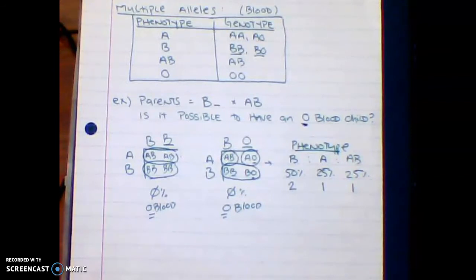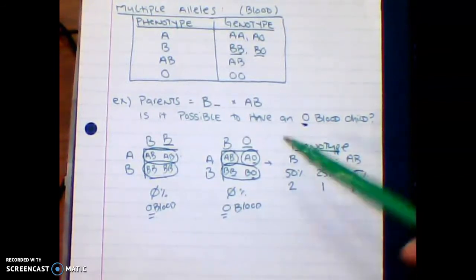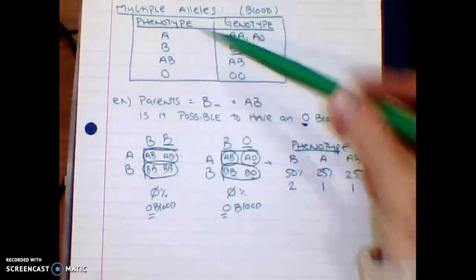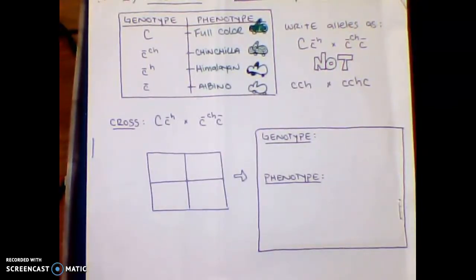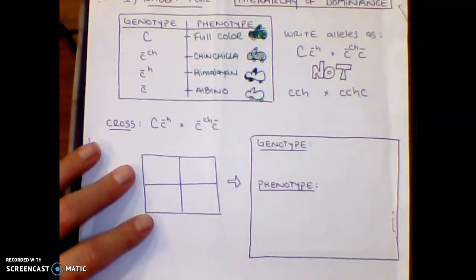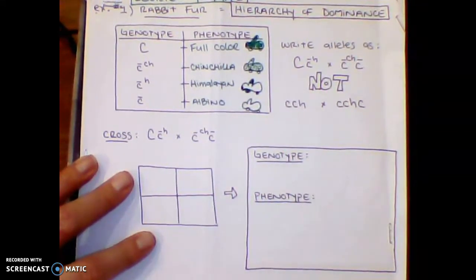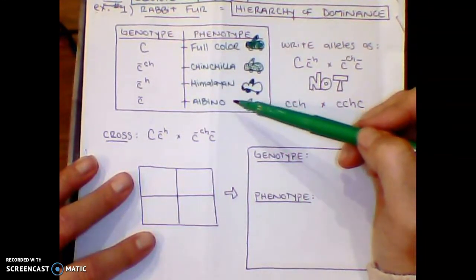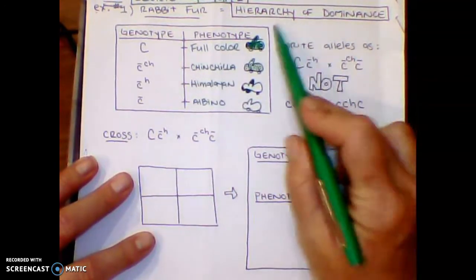So now let's spice this up. This is still considered multiple alleles because we have multiple letters for one trait, which is blood. Now let's go and look at something different where we have multiple alleles, but our one trait is now rabbit fur. So rabbit fur is a little bit different from blood. Blood is dominant, dominant, codominant, recessive. But rabbit fur, even though it's multiple alleles, it actually has what we call a hierarchy of dominance.